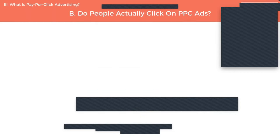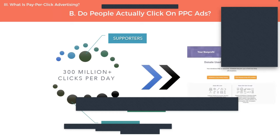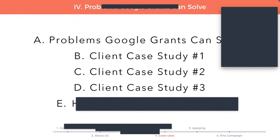That's just generally how it works. The number one question I get asked when I explain PPC ads is: do people actually click on them? I must admit when I first learned about this, I didn't think I really clicked on those ads — I thought I'd actually ignore them. But the data overwhelmingly supports that people do click on them. We have a statistic: 300 million plus clicks per day on these ads. Of those 300 million clicks, they could be your supporters, your donors, or your customers. The idea of the grant is to use some of that $10,000 per month to bring some of those 300 million clicks per day to your website.